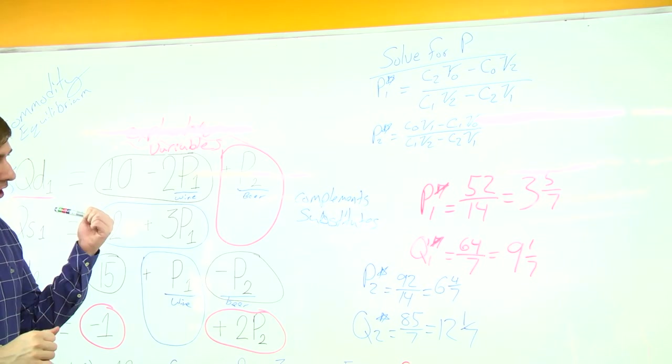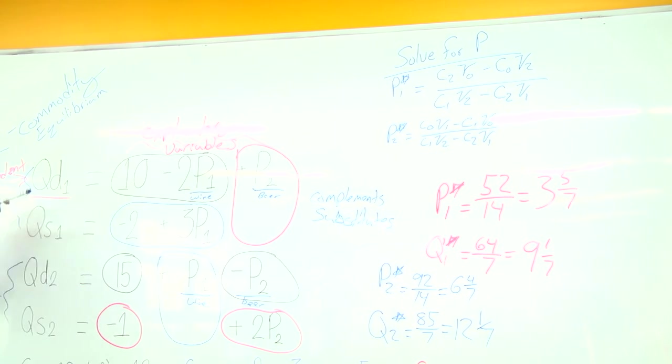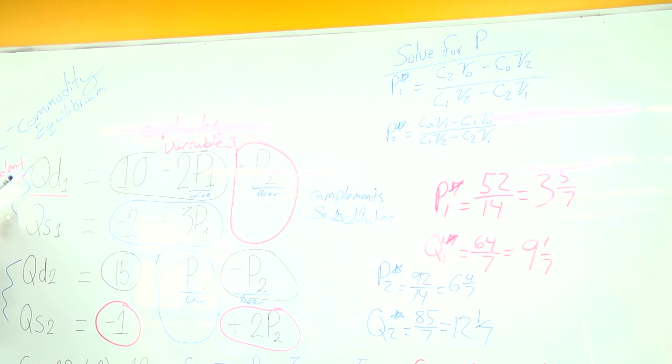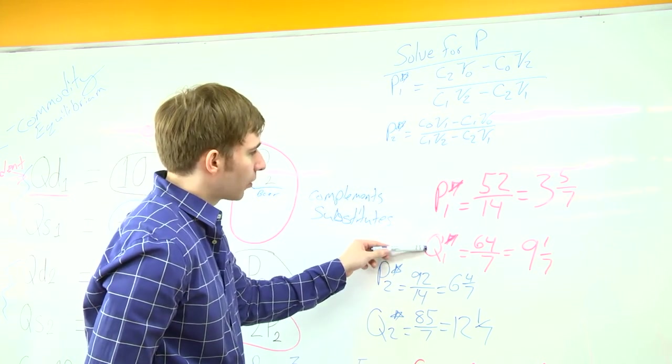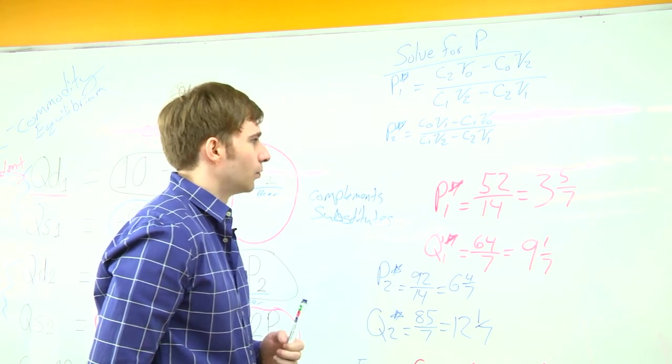Once I plug my P star 1 and my P star 2 back into the original equation, I can then solve for Q star. So I can plug it back into either my demand or my supply equation. It doesn't matter. And I'm going to get a Q star 1 of 9 and 1 7th and a Q star 2 of 12 and 1 7th.